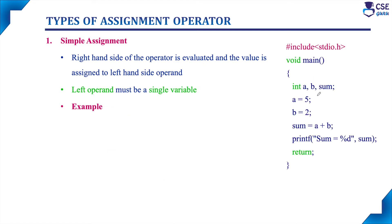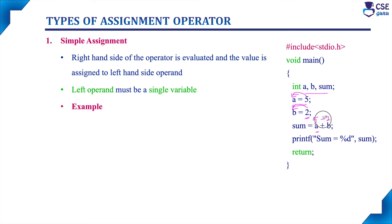Here is an example program. Three variables a, b, and sum are declared as integers. The value 5 is assigned to a and 2 is assigned to b. For sum = a + b: a carries 5 and b carries 2, so 5 + 2 = 7. The output will be sum = 7. This is an example of simple assignment.